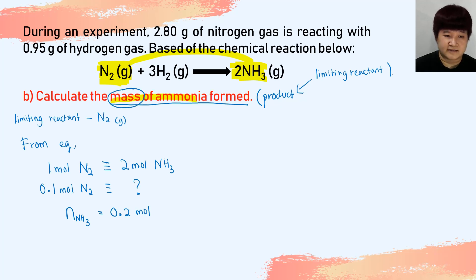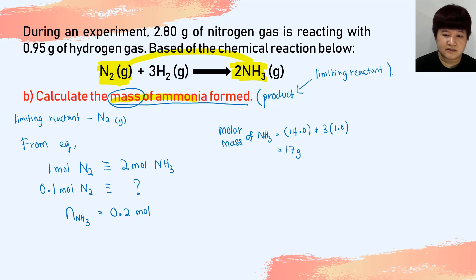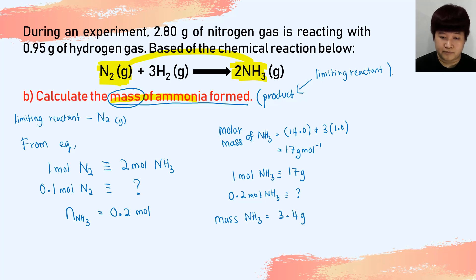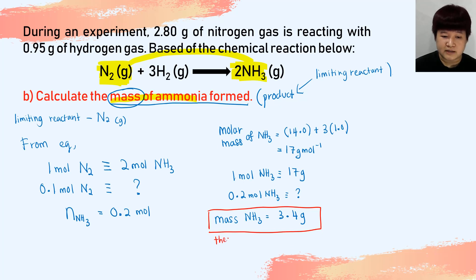The question asks for mass, so we work out the molar mass of ammonia: 14 + (3 × 1) = 17 g/mol. One mole of NH₃ is 17 g, and we have 0.2 mol, so the mass of ammonia that can be produced is 3.4 g. Since this mass is calculated from the stoichiometry of the equation, this is what we call the theoretical yield.